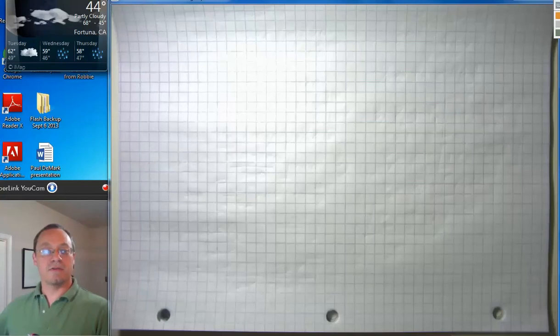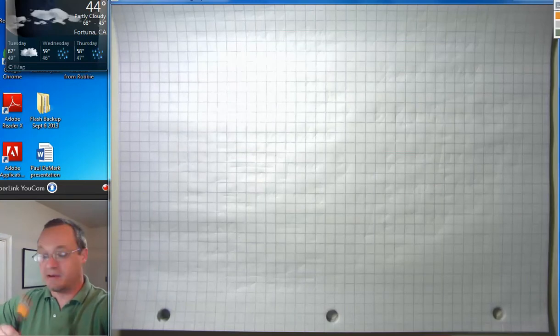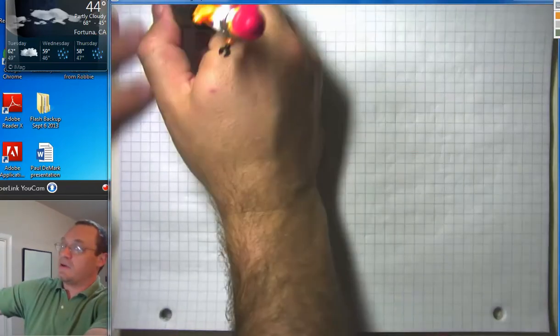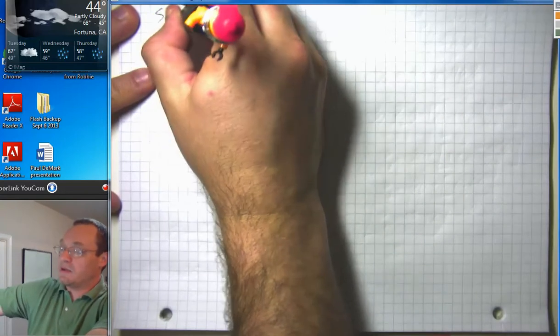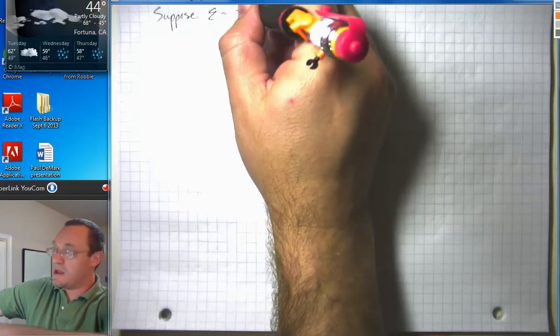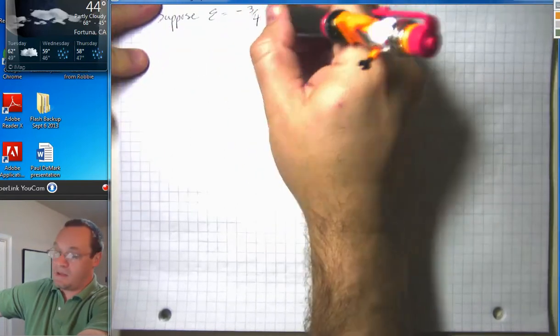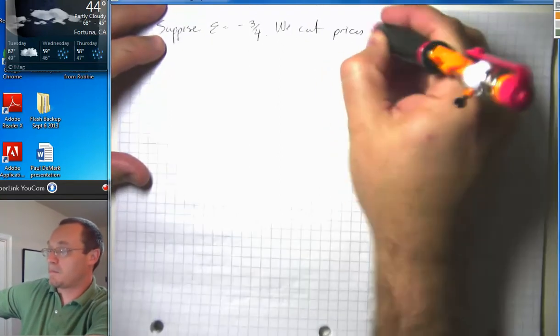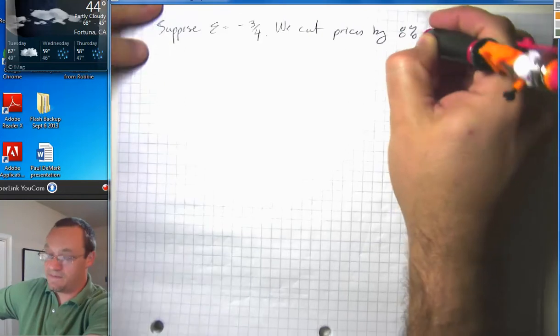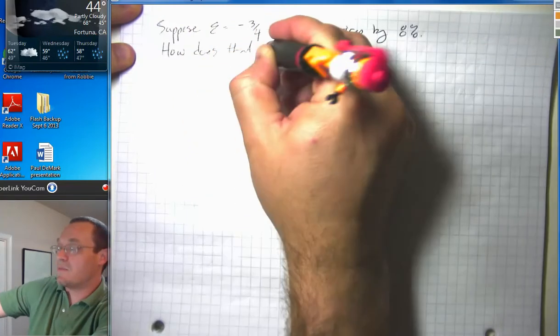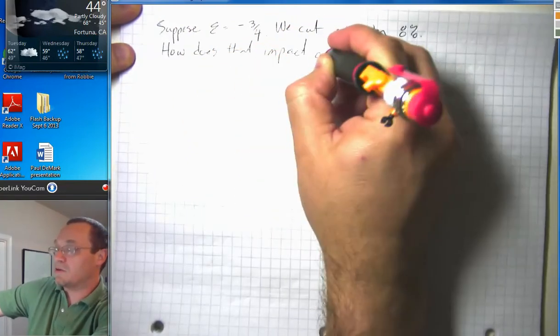Okay, so now let me go ahead and do my last elasticity application here with the help of my good friend Luke Skywalker, Lego Luke Skywalker. Suppose we know that elasticity equals negative three-fourths. We cut prices by eight percent. How does that impact our total revenue?